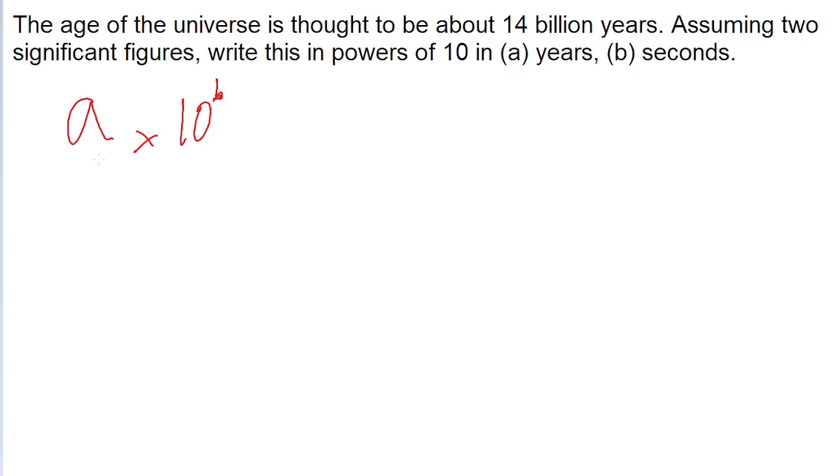So if we're trying to write 14 billion in powers of 10, then we want to choose our power of 10 in such a way that the first number, A, is 1.4, since that's something that will be greater than 1 and less than 10. We can't use 14 because that's too high, and we can't use 0.14 because that's too low. So we'll want to write 1.4 and then choose a power of 10 that will still make it equal to 14 billion years.